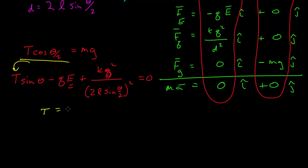So, T, the tension, is mg divided by cosine theta over 2. If I substitute that into here, I get mg tangent of theta over 2, plus this whole thing.